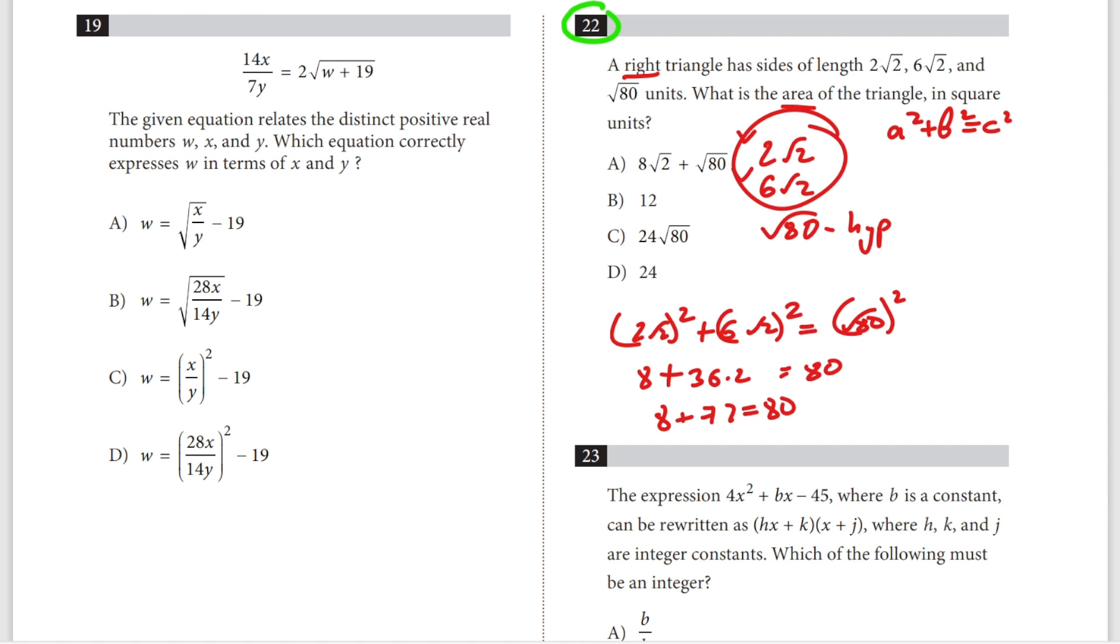To find the area, all we have to do is multiply leg 1 times leg 2, divide by 2, and cancel the 2s.